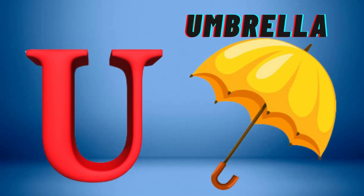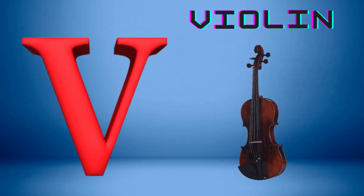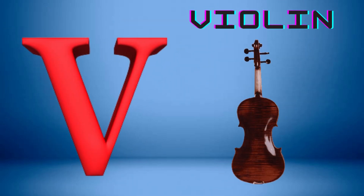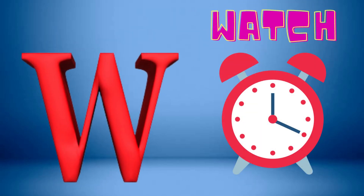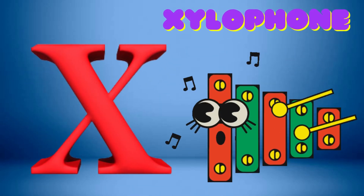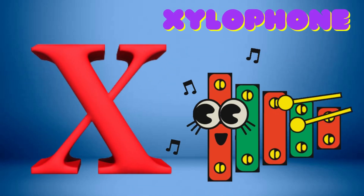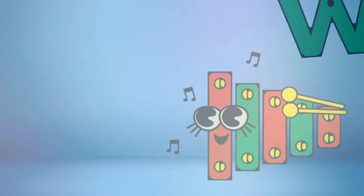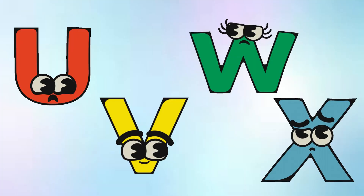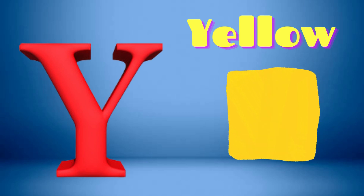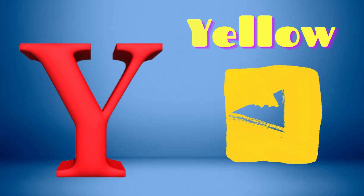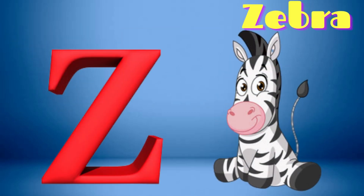U is for Umbrella, U-U-Umbrella. V is for Violin, V-V-Violin. W is for Watch, W-W-Watch. X is for Xylophone, X-X-Xylophone. Y is for Yellow, Y-Y-Yellow. Z is for Zebra, Z-Z-Zebra.